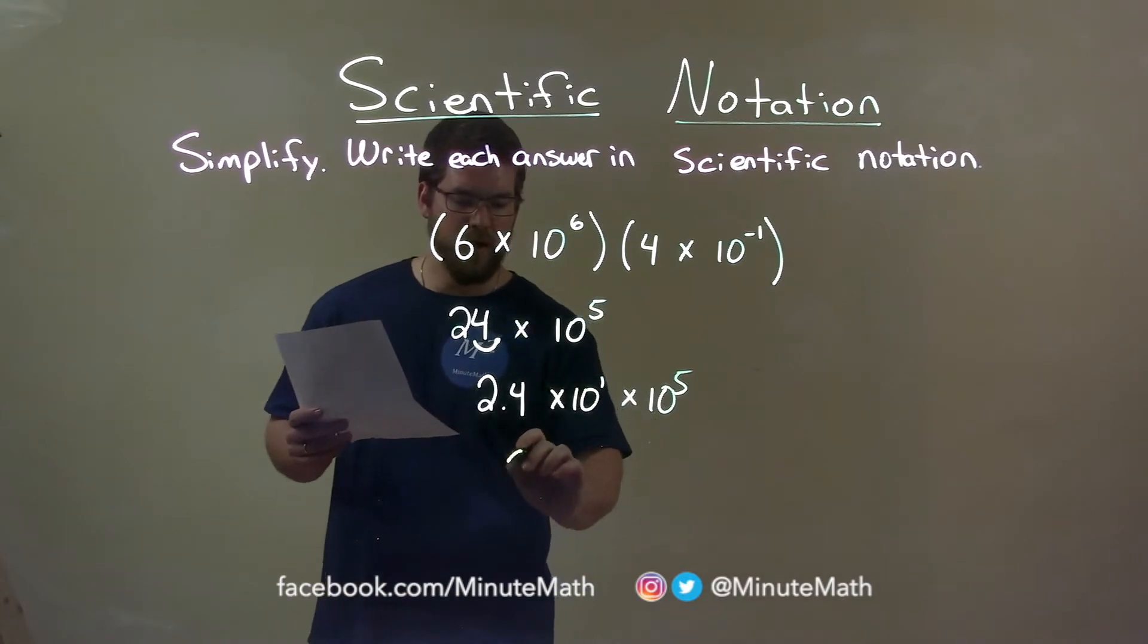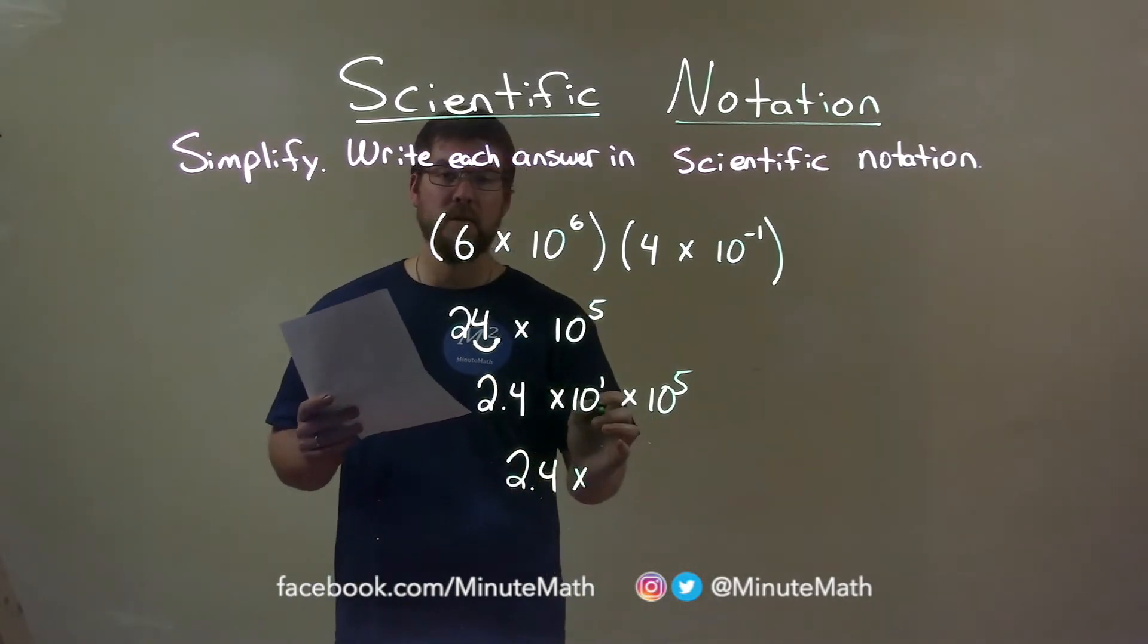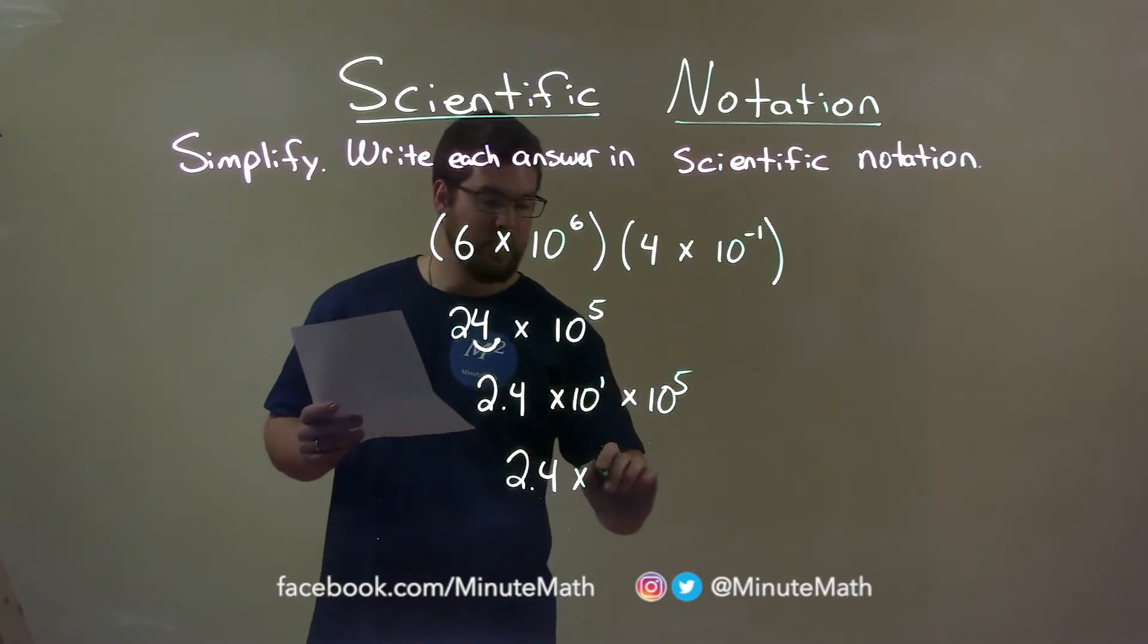2.4 is fine just the way it is, but again, like we did before, multiplying the tens, we add the exponents. So, we have 10 now. 1 plus 5 is 6. Sixth power.